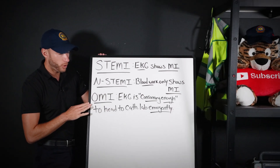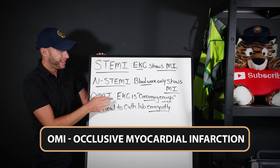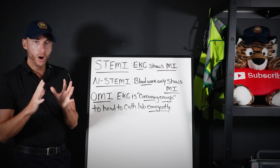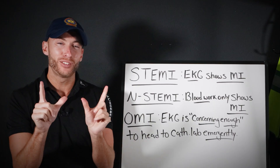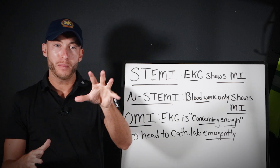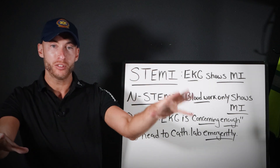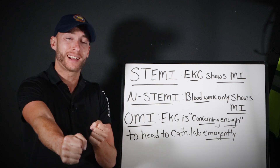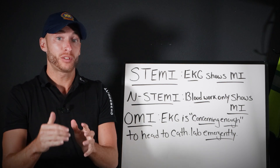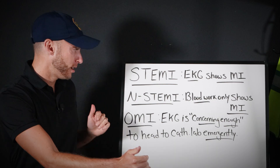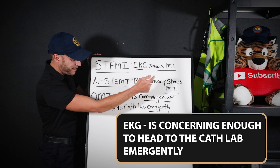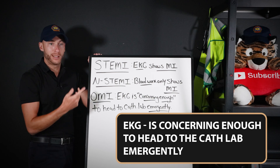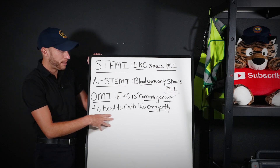This is why there's a new term called OMI — occlusive myocardial infarction. Think of it as the middle ground between STEMI and N-STEMI. The whole goal of OMI is: you're a paramedic in the ambulance, and the EKG is concerning enough — combined with the patient's symptoms, vitals, history, and EKG — where it's not showing a full-blown heart attack, but it's concerning enough to head to the hospital and get that patient into the cath lab emergently. This way, your N-STEMI patient doesn't get burned sitting down in the ER.